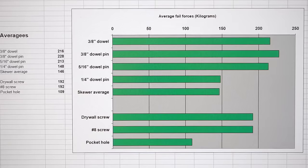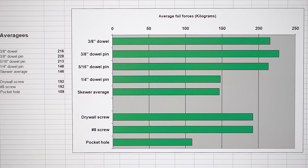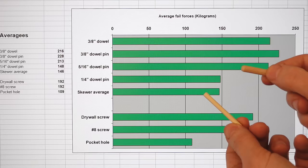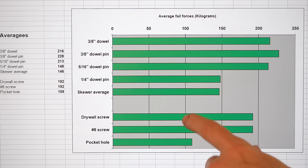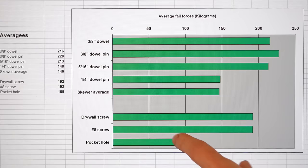Looking at the averages of my fail forces the 5/16th inch dowel pin actually did surprisingly well compared to the 3/8ths. Next we have the 1/4 inch dowel pin and the bamboo skewer which did almost as well as the 1/4 inch dowel pin but also made my bamboo skewer pins a little bit longer. Worst was the pocket hole but all the screw joints opened up a fair bit before their ultimate failure. But, an interesting takeaway from this is that just a piece of bamboo skewer will hold things together better than a pocket hole screw.